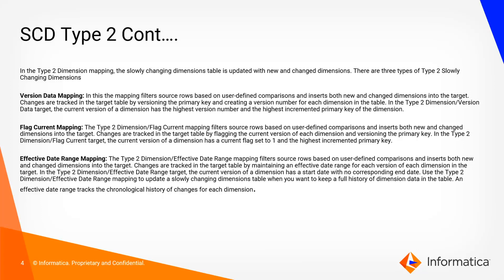In version data mapping, changes are tracked in the target table by versioning the primary key and creating a version number for each dimension. The current version of a dimension has the highest version number and the highest incremental primary key. In flag current mapping, changes are tracked by flagging the current version of each dimension; the current version has the current flag set to active and the highest incremental primary key.